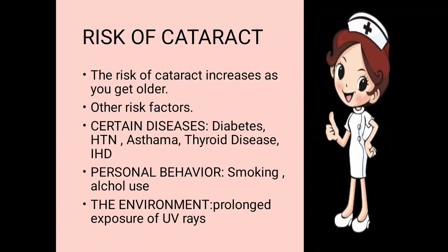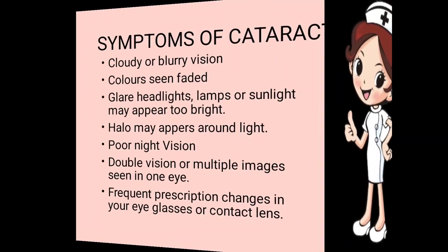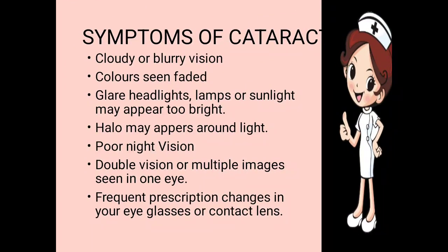The next risk factor is personal behavior. Personal behavior includes smoking as well as alcohol use. If the person is interested in smoking or drinking alcohol, then he or she has the risk of cataract developing in the eyes.